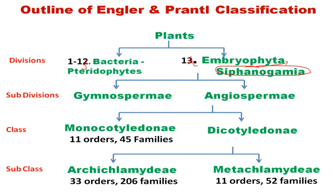Embryophyta was divided into two groups: Gymnospermia and Angiospermia. Gymnospermia was divided into 7 orders, ranging from Cycadophyta to Gnetales. Angiospermia was divided into two classes: Monocotyledny and Dicotyledny. Dicotyledny was further divided into two subclasses: Archichlamydeae and Metachlamydeae, the latter also called Sympetalae.